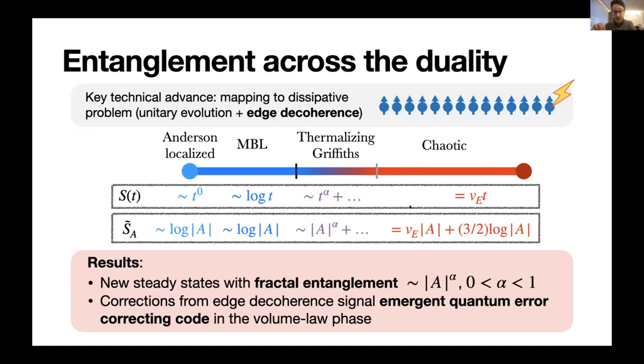So first of all, I want to point to one thing we get out of this mapping, which is that this sub-ballistic growth of entanglement in these thermalizing Griffiths circuits dualizes to a family of states with a scaling of entanglement in space which is fractional. It's a fractional power law between zero and one, which is tunable based on where you are in this Griffiths regime.